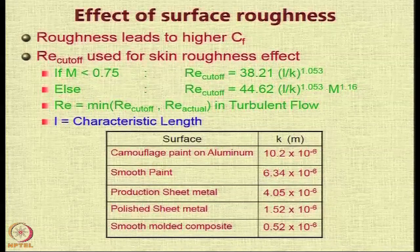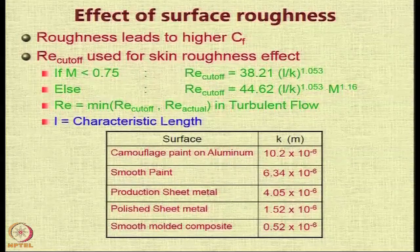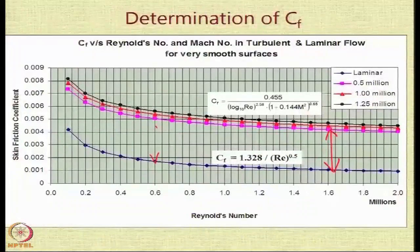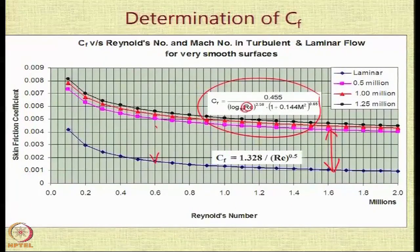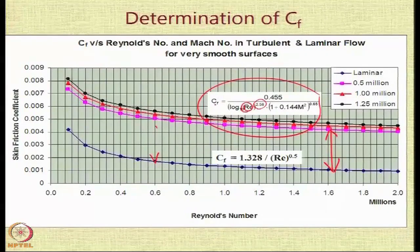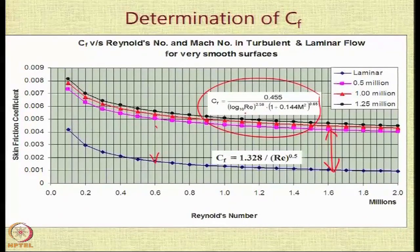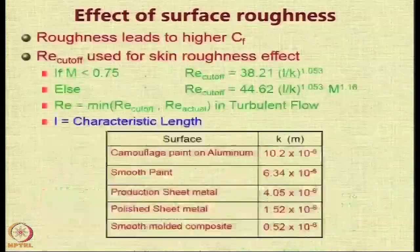We use either the cutoff Reynolds number or the actual Reynolds number in the turbulent flow calculation. In the turbulent flow formula, the Reynolds number appears in the denominator with a power of 2.58. If Reynolds number is large, CF is small. If we have more surface roughness, instead of the actual Reynolds number we use a cutoff Reynolds number — which is a smaller value — and this smaller value gives a higher CF, accounting for the effect of surface roughness.